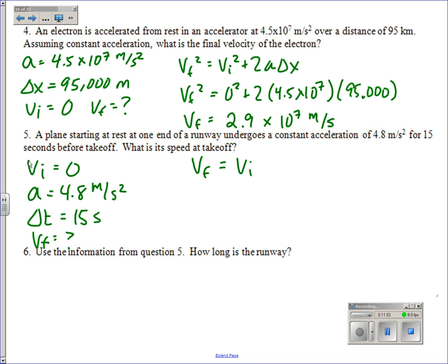Again, find your kinematic equation with the proper four variables, plug in the numbers and solve. We get 72 meters per second.